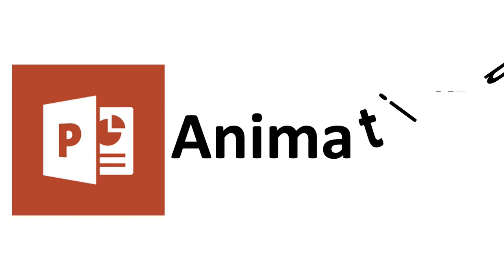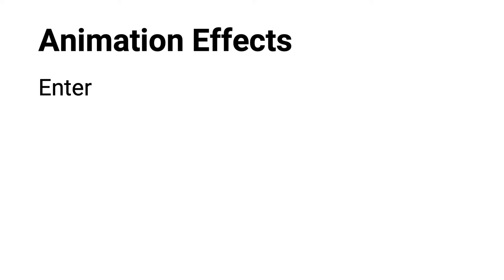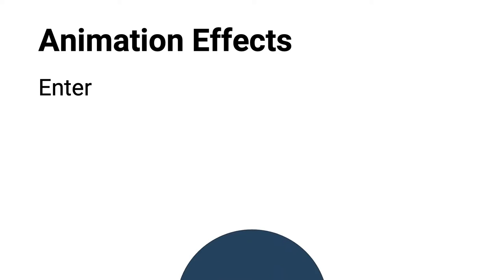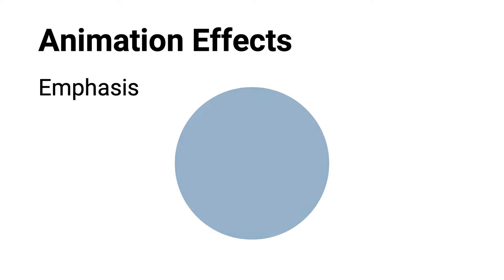Before you begin applying animation in PowerPoint, it helps to know how they are categorized and how those categories affect the function of the animation. These categories, or types, are referred to as effects. The first effect category is Enter — objects are not visible initially and appear based on a specific action by the presenter, like a click of a mouse. The second effect category is Emphasis, where an object is visible on the slide and will animate to draw attention to it, such as pulse.